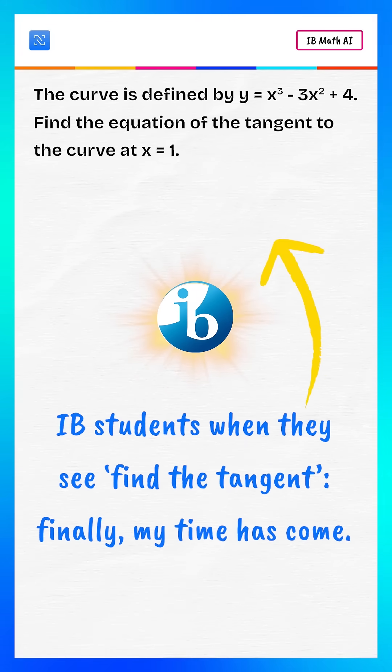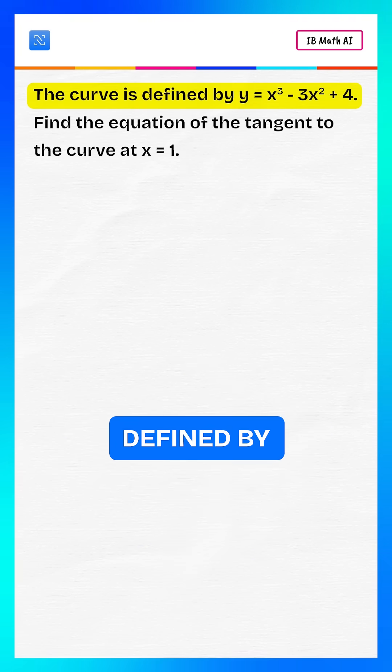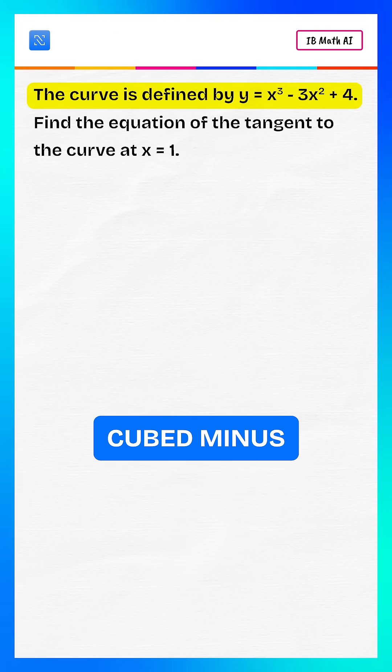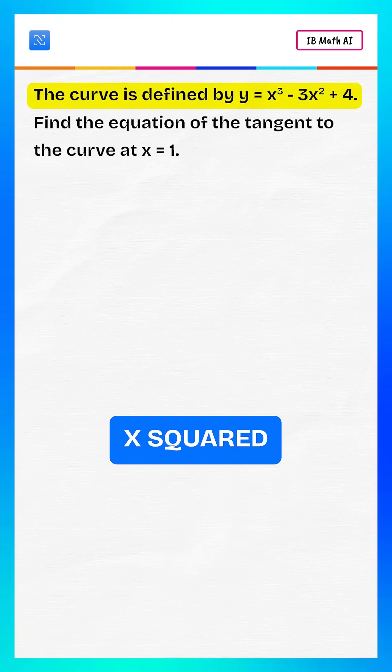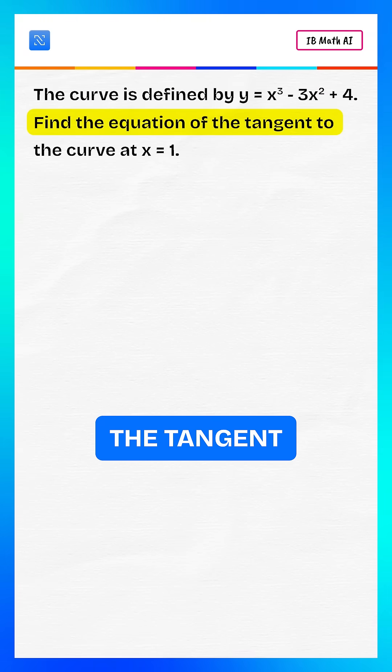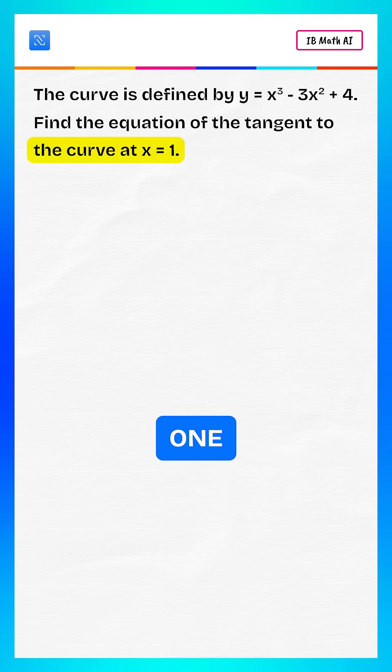IB students when they see find the tangent, finally, my time has come. The curve is defined by y equals x cubed minus 3x squared plus 4. Find the equation of the tangent to the curve at x equals 1.